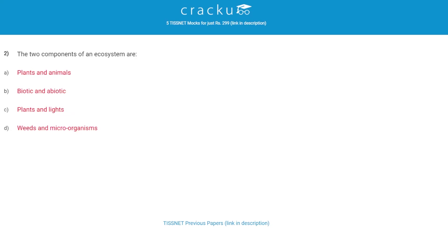The two components of an ecosystem — the correct answer is B, biotic and abiotic. The abiotic components of an ecosystem are the properties of the environment, and the biotic components are the life forms that occupy a given ecosystem.